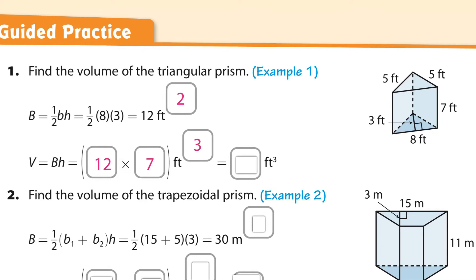Volume is cubed. So now it turned from square units — that's square units — times another dimension into cubic units. That tells us how many cubes we have in this triangular prism. It's 84, because 12 times 7 is 84 cubic feet.